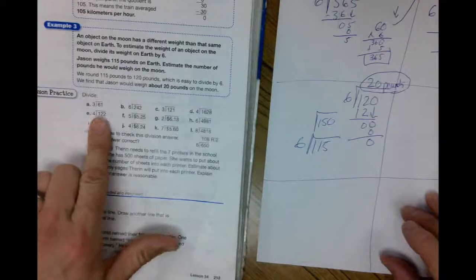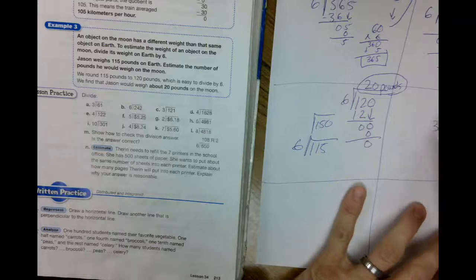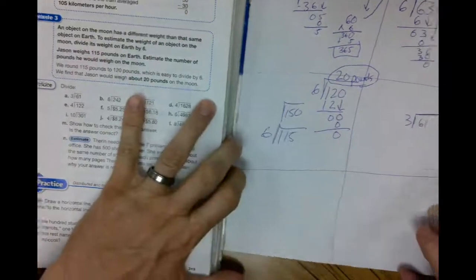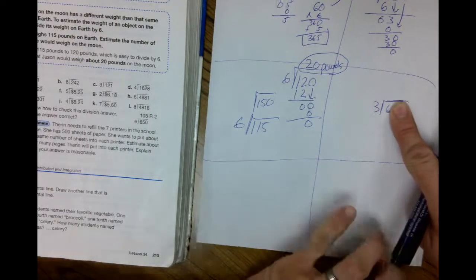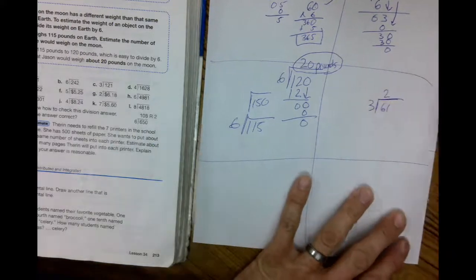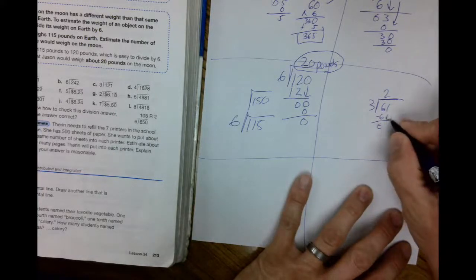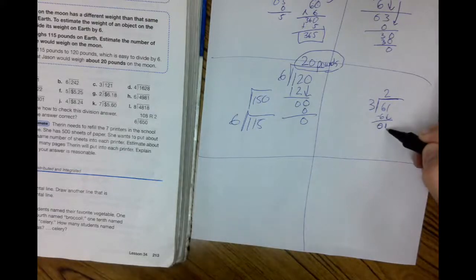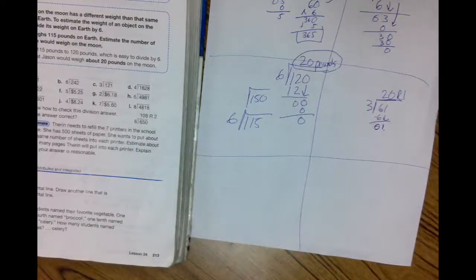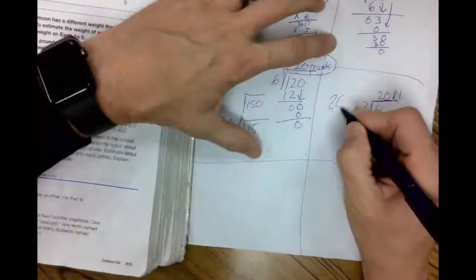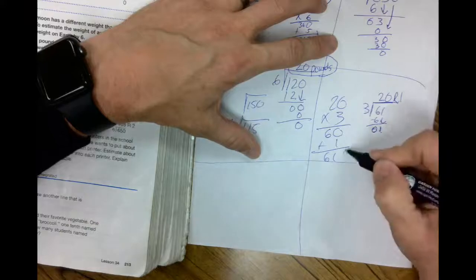All right, guys. So we were working on quotients with zeros in it. Let's take a look at a couple in our lesson practice for today. In your fourth box, go ahead and write 61 divided by three. How many times does three go into six? Three goes into six two times. Two times three is six. Subtract and you get zero. Bring down the one. How many times does three go into one? Zero. You have to have the zero. It's a placeholder. And then one becomes your remainder. Check a problem. Twenty times three equals 60 plus your remainder is 61.